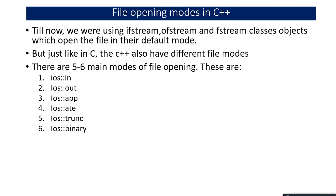There are six different file opening modes in C++: ios::in (input), ios::out (output), ios::app (append), ios::ate (append to end), ios::trunc (truncate), and binary to create a binary file. These are the main five to six modes generally used in programming, and we will discuss them one by one.